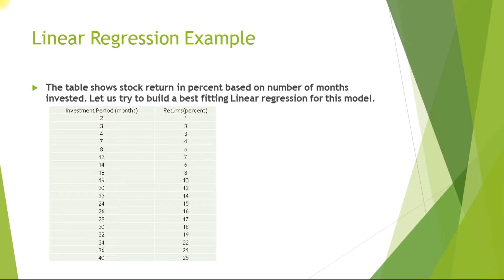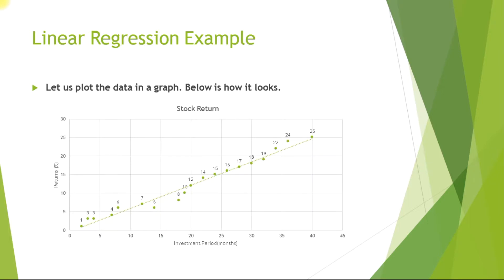Let us try to understand linear regression with an example. The table below shows the stock return in percent based on number of months it is kept invested. Let us use this data set and find the best fitting linear regression for this model. If you see here, the data points are represented in a graph and you can see a trend line that passes through either most of the data points and the other data points which are not touching this line seem to be closer to it.